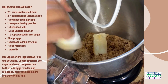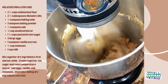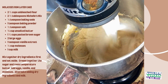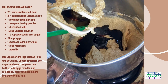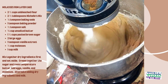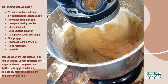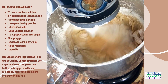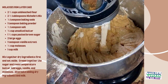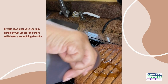Brown sugar is made by coating white granulated sugar with molasses. Also, if you can't consume cow's milk, almond milk works really well in this recipe. Once you've mixed all the ingredients, divide the batter into two eight-inch pans and bake at 350 degrees for 30 to 40 minutes. Remove from the oven and let cool in the pan for five minutes, then remove from the pans and cool completely on wire racks.